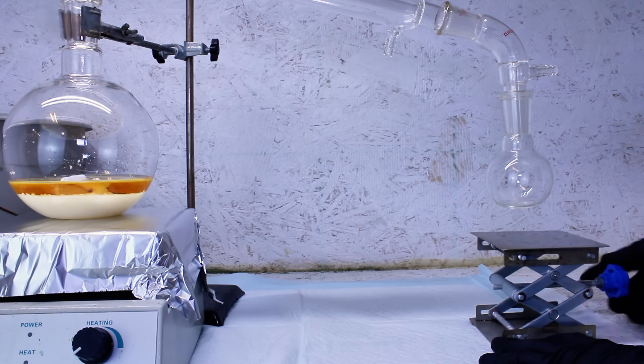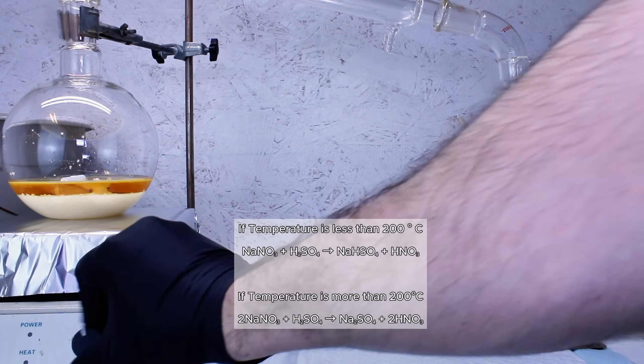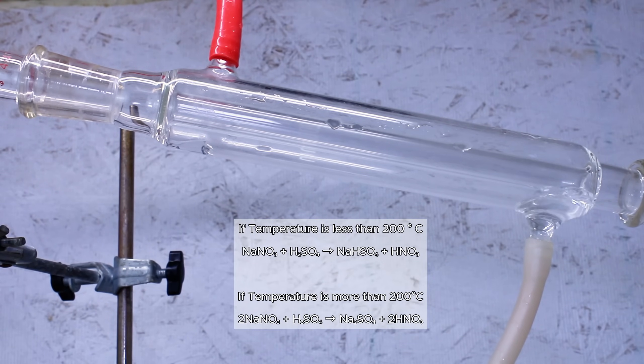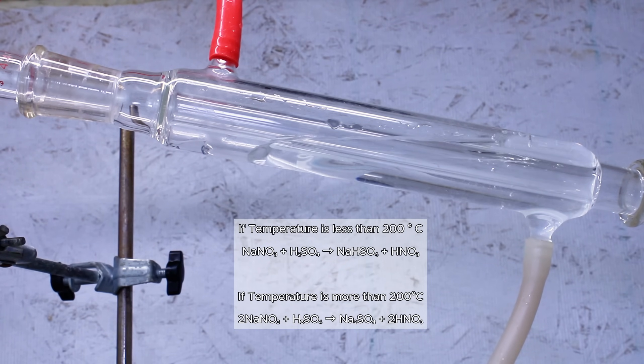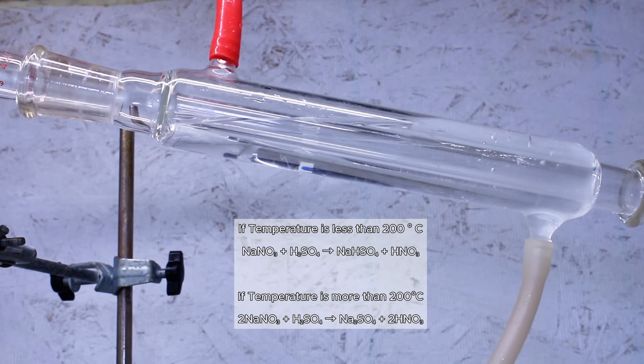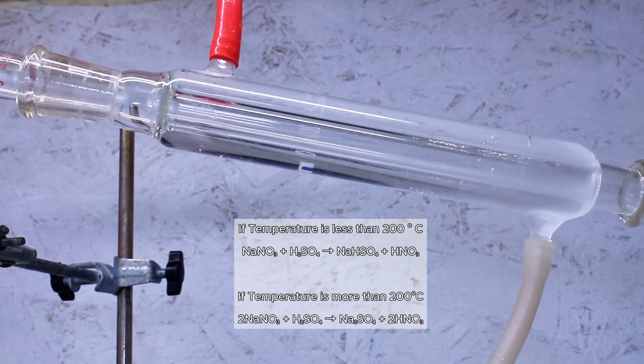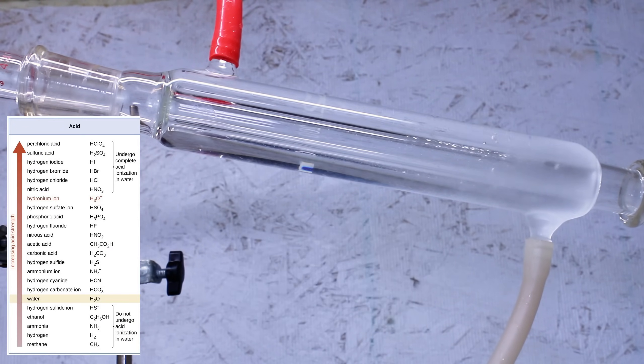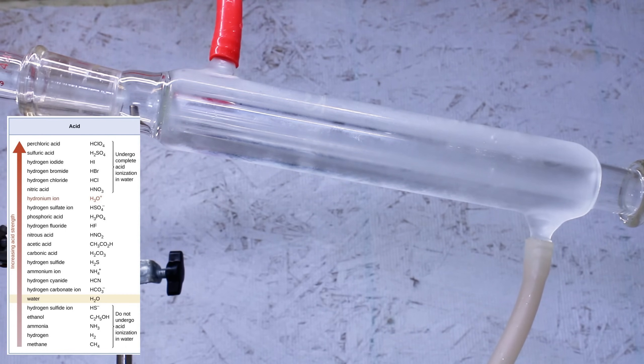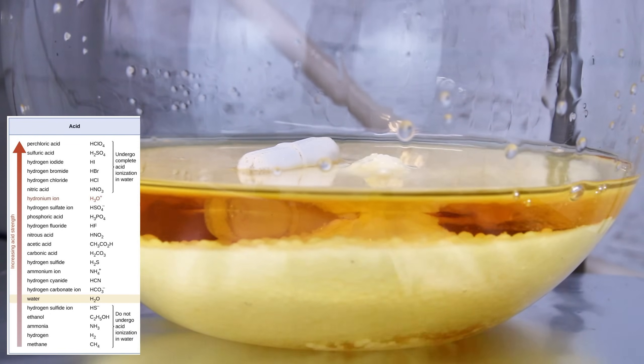If the reaction is conducted above 80 degrees Celsius but below 200 degrees Celsius, then the sodium nitrate and sulfuric acid will react to form one molecule of nitric acid and one molecule of the acidic salt sodium bisulfate. This happens because sulfuric acid is stronger than nitric acid, meaning that the nitrate ion has a higher affinity for hydrogen than the sulfate ion has for two hydrogen ions.